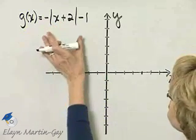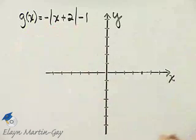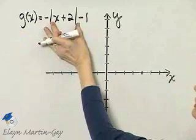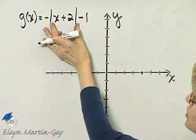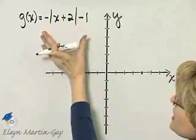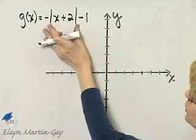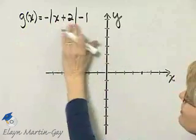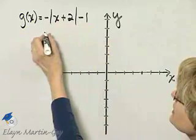Now, remember, because of the absolute value, this is a v-shape. Because of this x plus 2, it moves that graph two units to the left and one unit down.